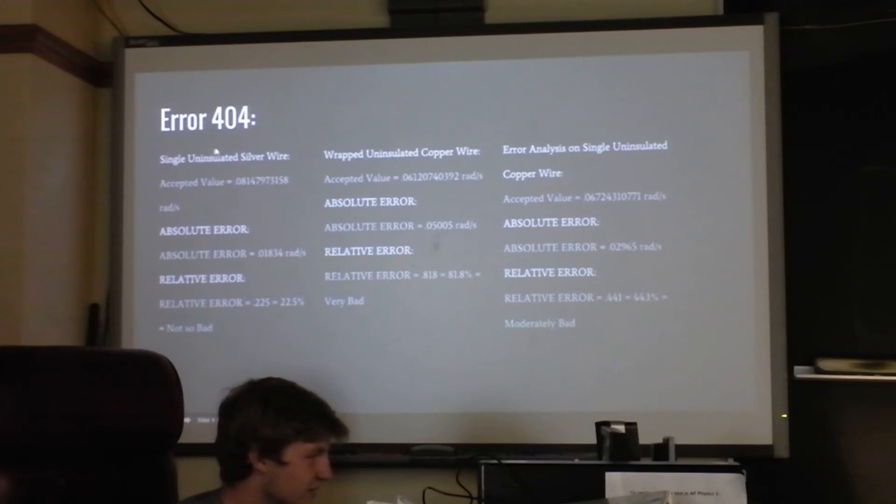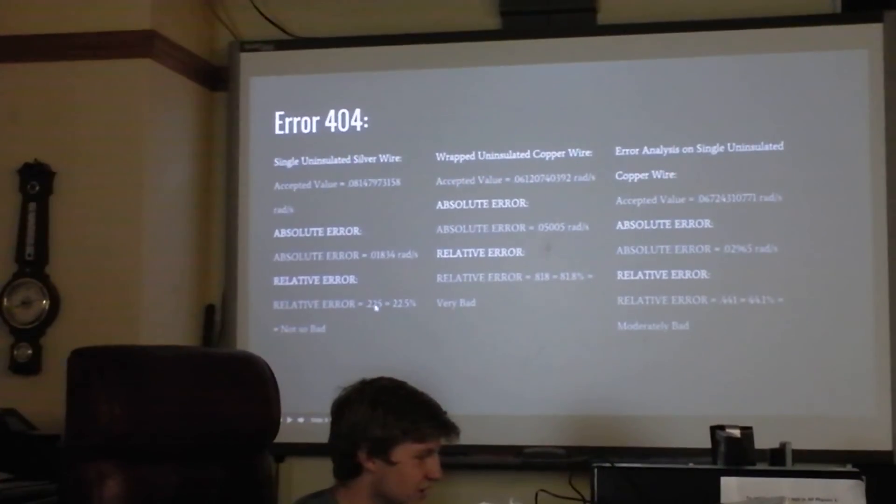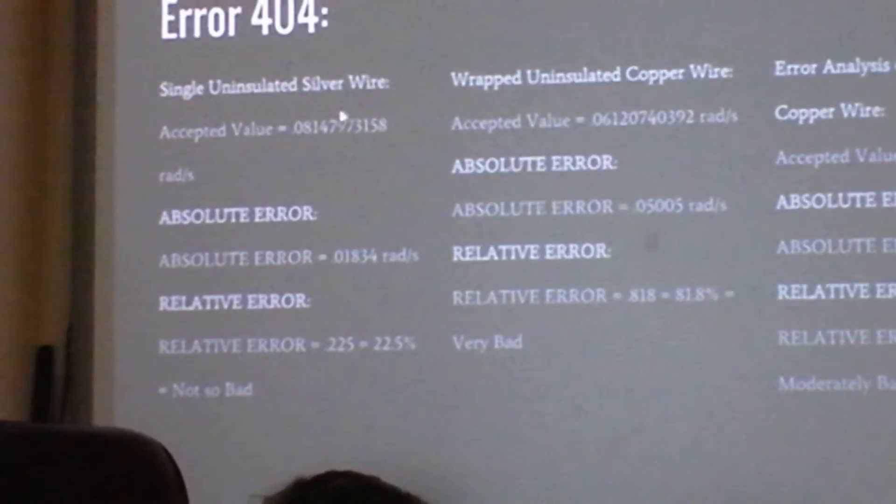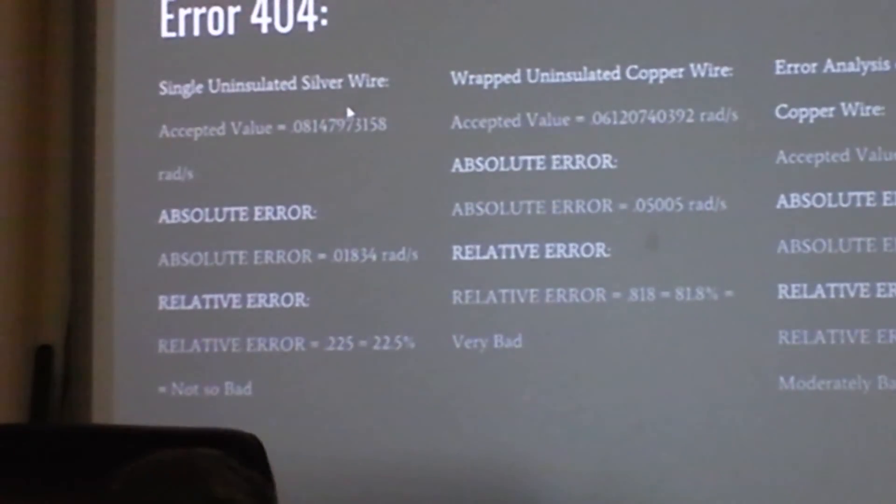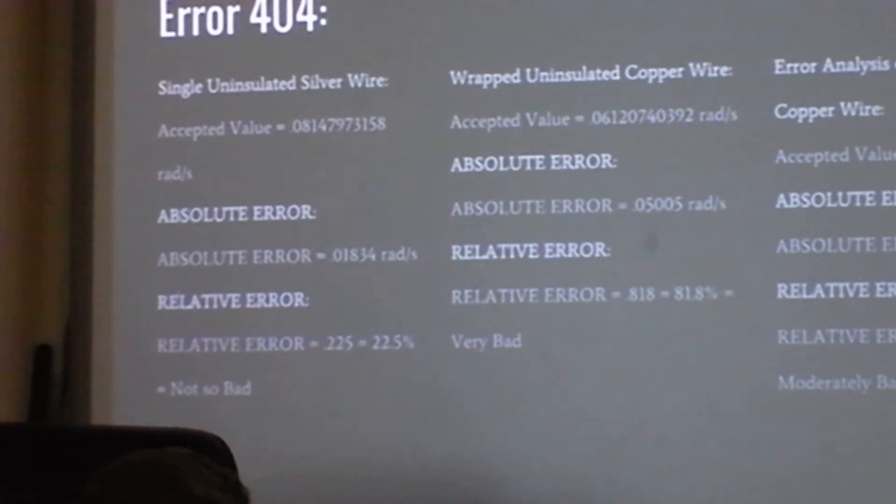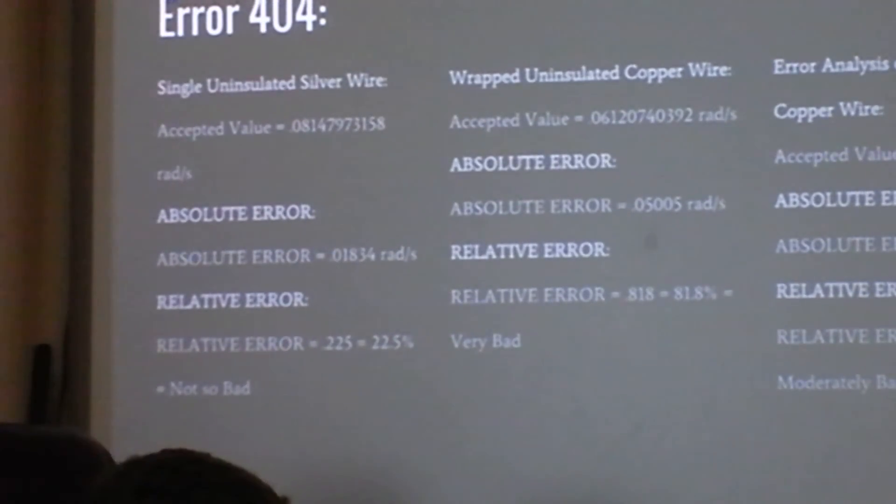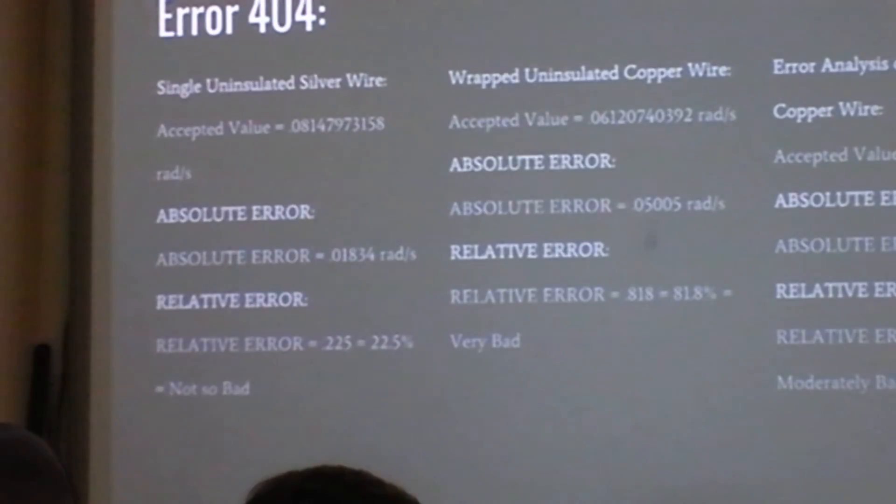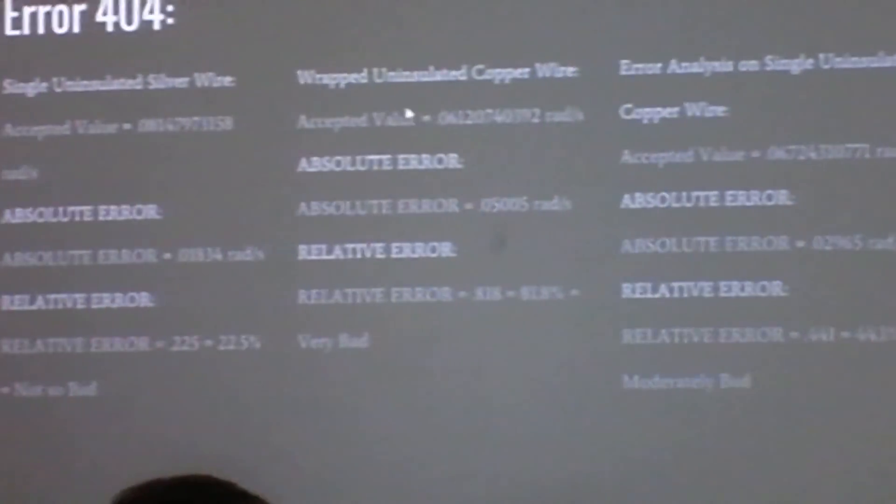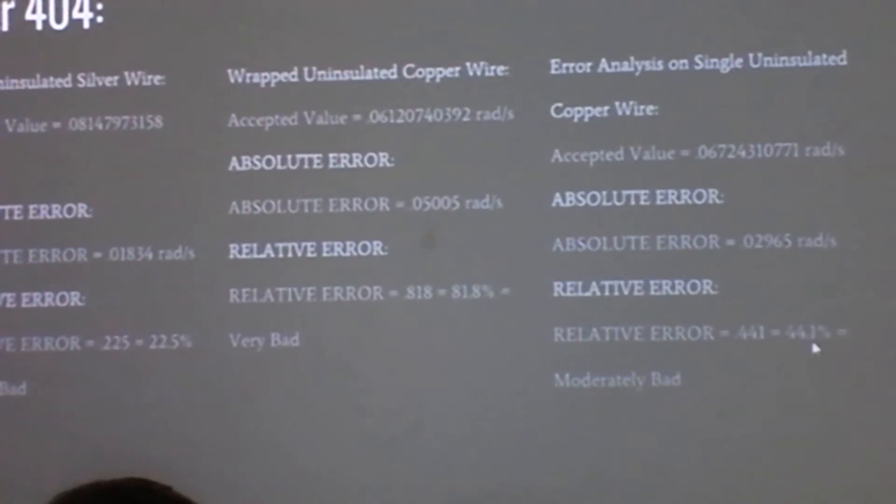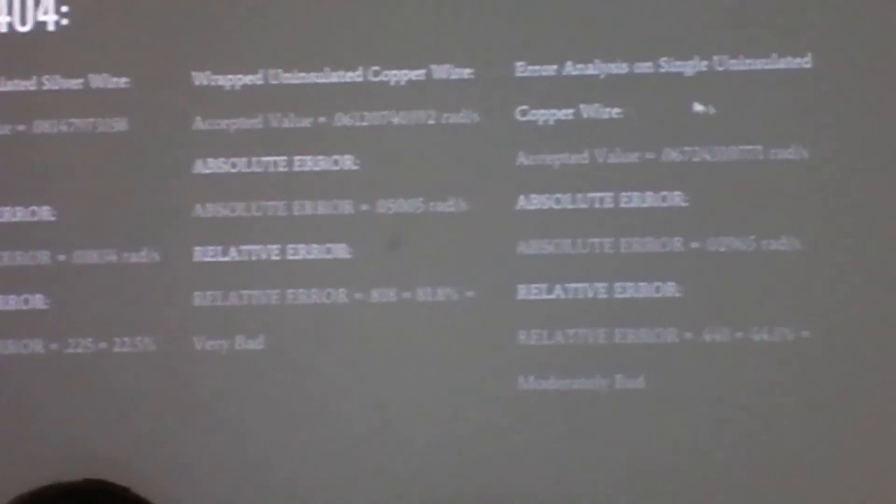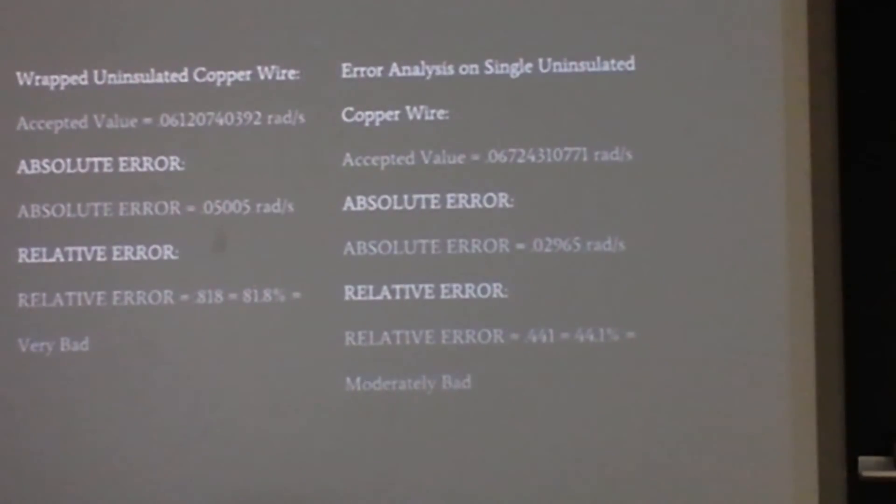So this is my error. Single uninsulated silver wire, I got like 22.5% error, which is not so bad. I think it's because silver is a really good wire to use. Like, besides copper, it's the most well known, but I think silver is one of the best that you could use. 81.8% for the wrapped uninsulated copper wire, and 44.1% for the single uninsulated copper wire.